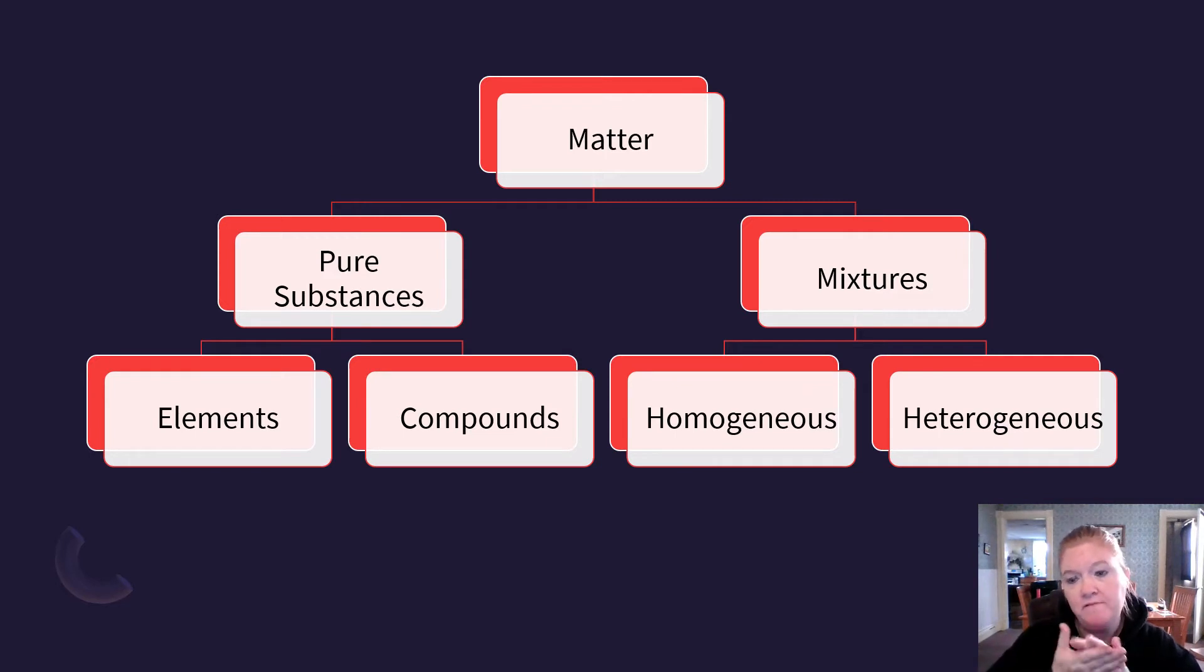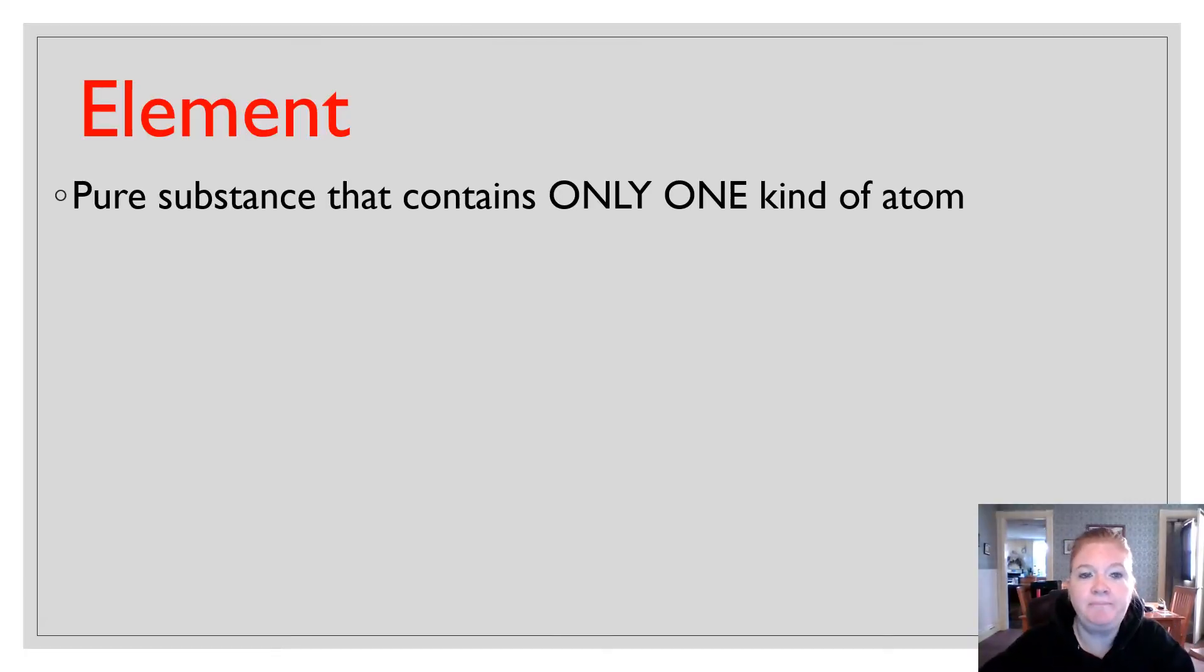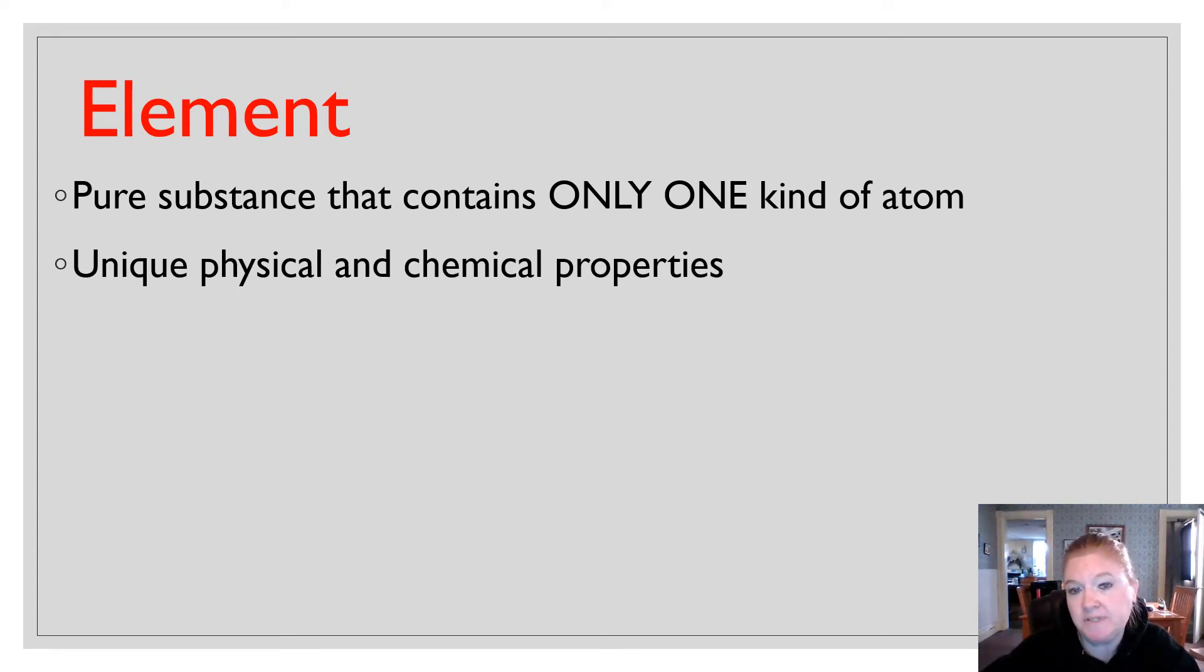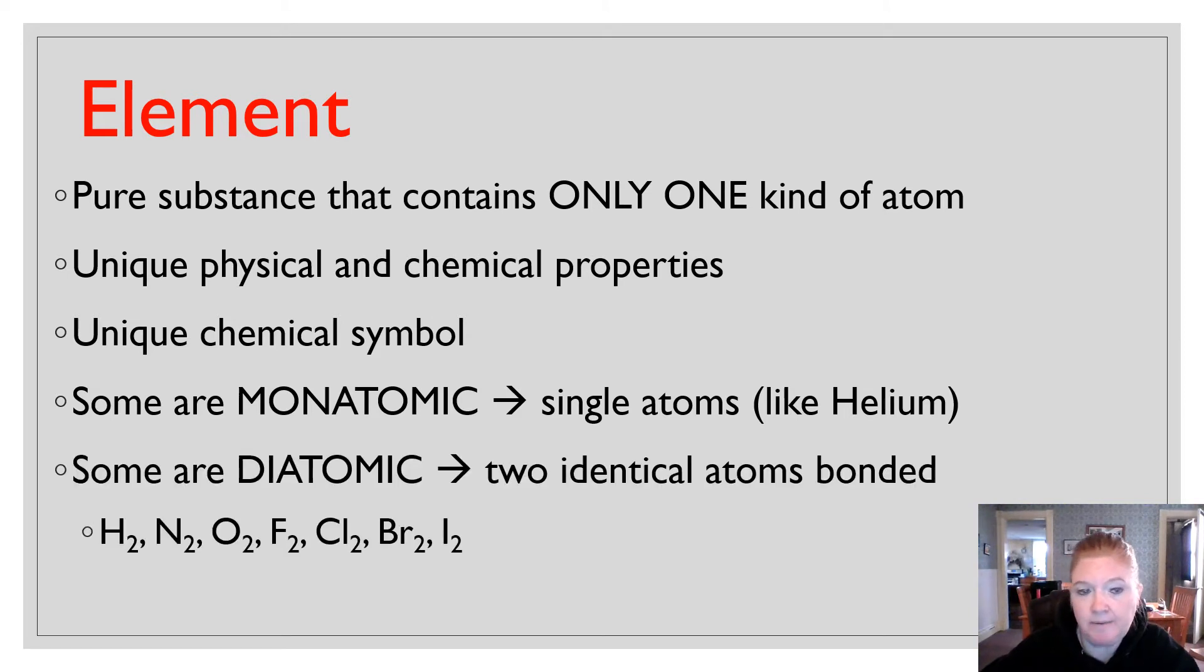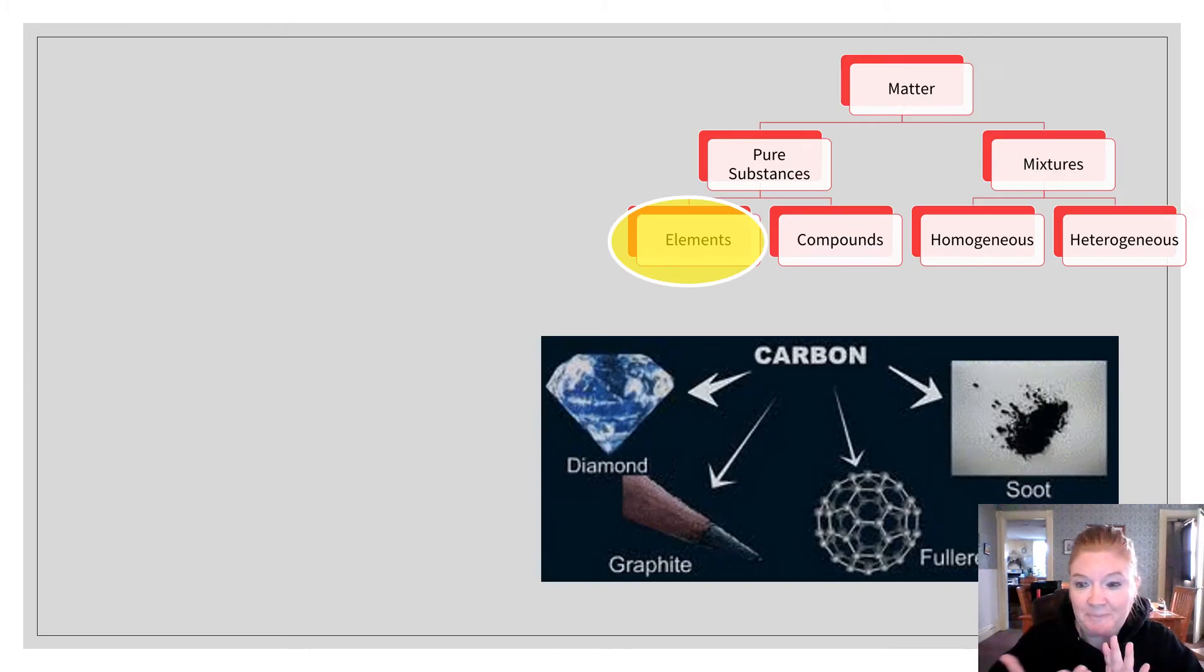And allotropes fit within that category of elements. So an element is a pure substance that contains only one kind of atom, so same number of protons. They have unique chemical and physical properties. They have a unique chemical symbol. Some are monatomic, like single atoms, like helium. Some are diatomic, so that's two atoms that are bonded. And that is hydrogen, and then that little going across NOF, and then all the way down group 17.